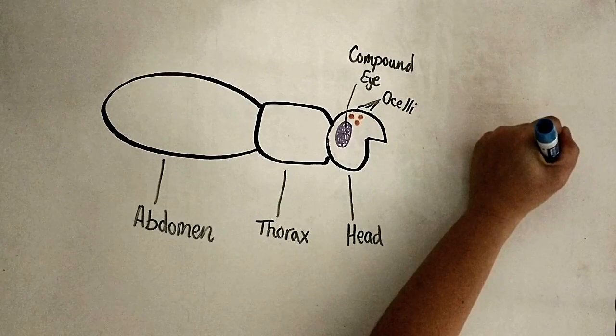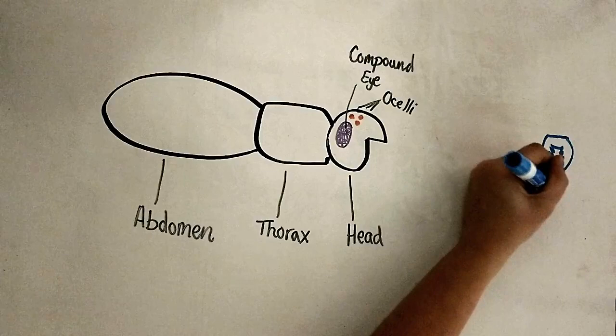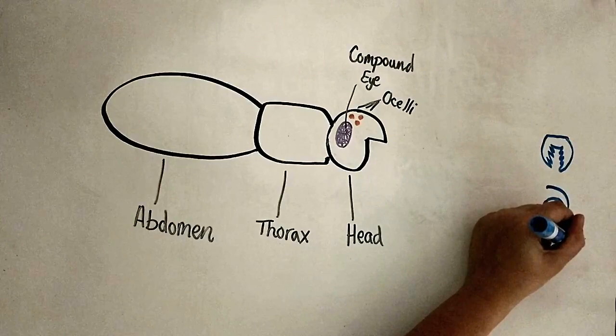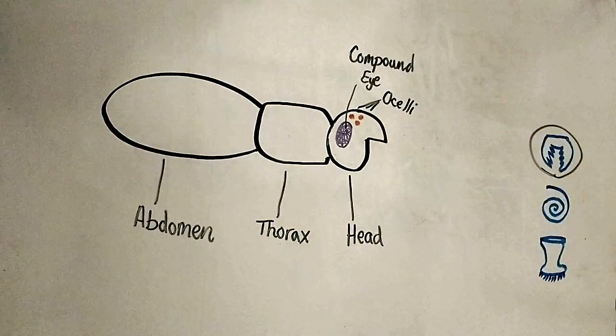There are many kinds of mouthparts because insects have a variety of diets. They can have chewing mouthparts like in beetles and caterpillars, straws like in butterflies and moths, or sponges like in flies. Our insect is getting a chewing mouthpart.